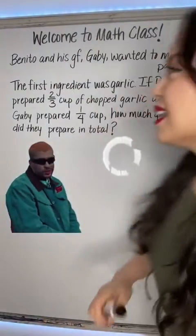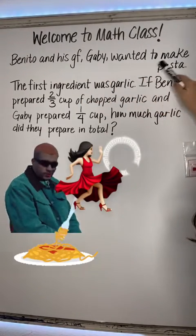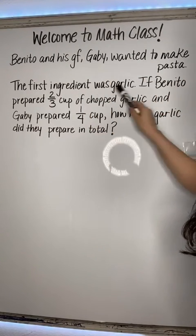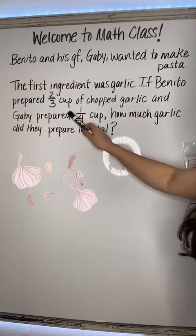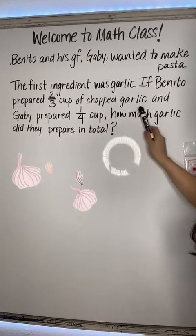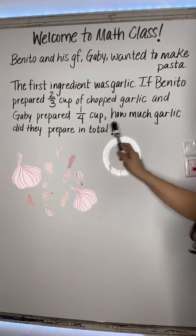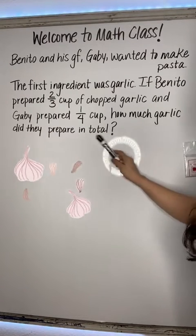I'm gonna use Bad Bunny again. So let's say Benito and his girlfriend Gabby wanted to make pasta. The first ingredient was garlic. If Benito prepared a two-thirds cup of chopped garlic and Gabby prepared one-fourth cup, how much garlic did they prepare in total?